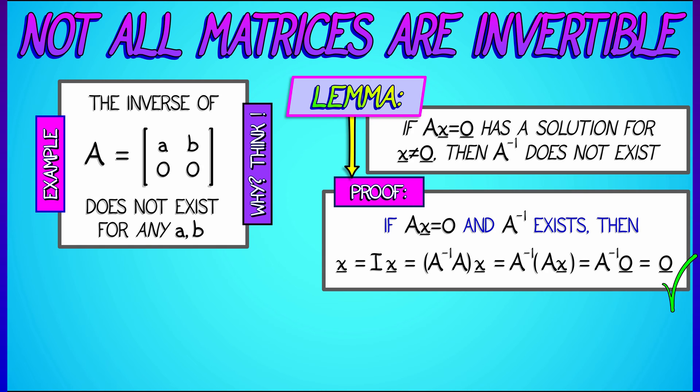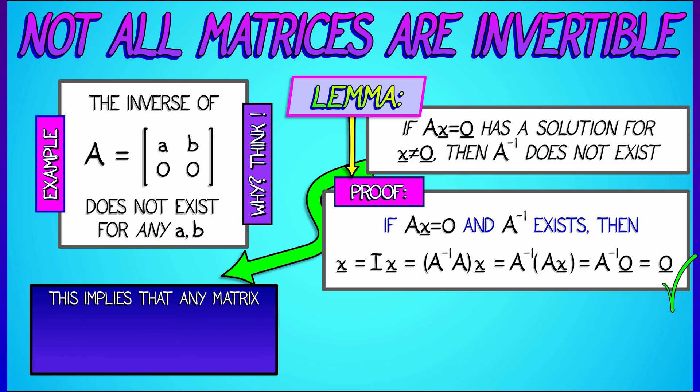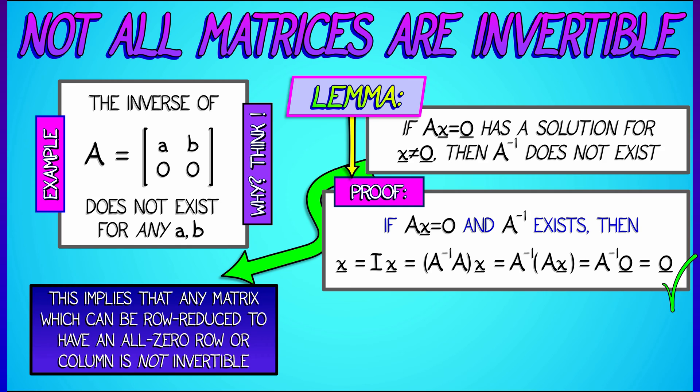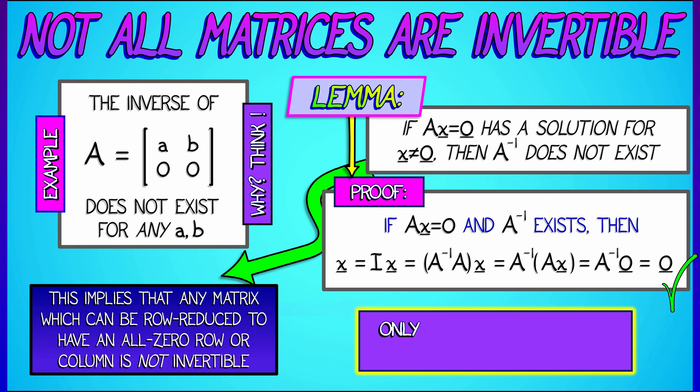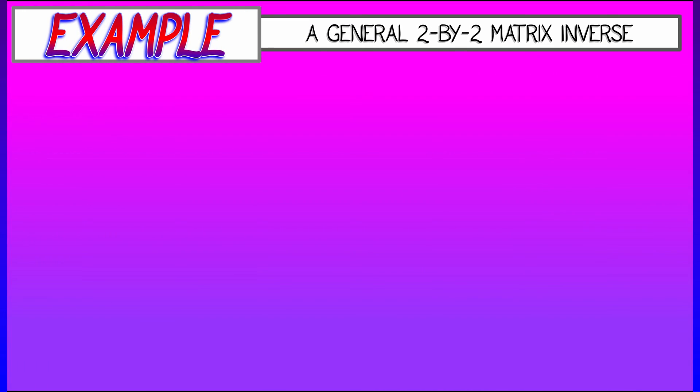So that's something. And you could apply that lemma to the previous 2x2 matrix. We can also say that any matrix which can be row-reduced to have an all-zero row or an all-zero column is definitely not going to be invertible, again, by this lemma. And from this, we can conclude that only square matrices can possess an inverse. That's a good start.